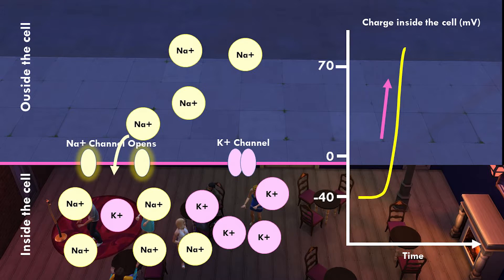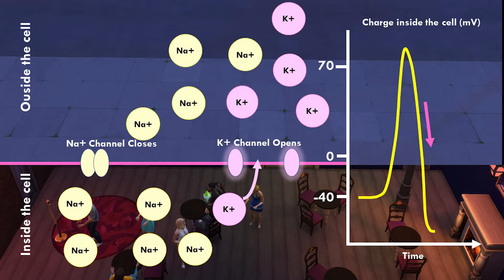Now the club has a new problem — over occupancy. If the fire marshal catches this, they're going to shut everything down. So we've got another bouncer: his name is 'potassium channel,' sodium channel's brother. He opens his own door and starts kicking out the potassiums that have been hanging around way too long.